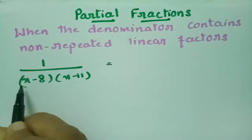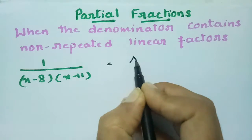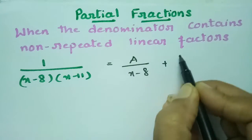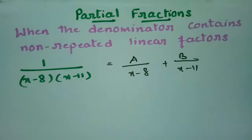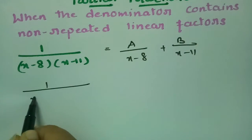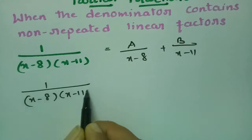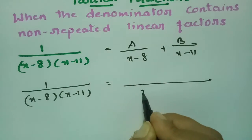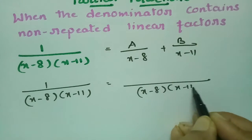For 1 by (x minus 8) into (x minus 11), I am going to write it as A by (x minus 8) plus B by (x minus 11). So, 1 by (x minus 8)(x minus 11) is equal to — if I take LCM — this is (x minus 8) into (x minus 11).